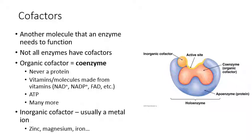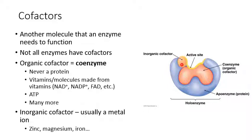This diagram illustrates how cofactors work: in blue you have the actual enzyme, which needs two different cofactors. It has a coenzyme or organic cofactor in red, and an inorganic cofactor in yellow — probably a metal ion. If you don't have those two cofactors, the active site won't have the right shape and the enzyme will not be able to function.